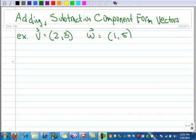All right, we want to add and subtract component form vectors. So to do that, here I've got an example of vector v, component form 2, 3,